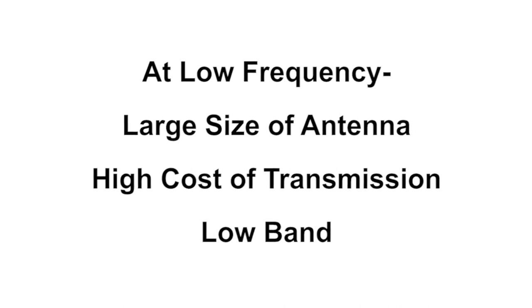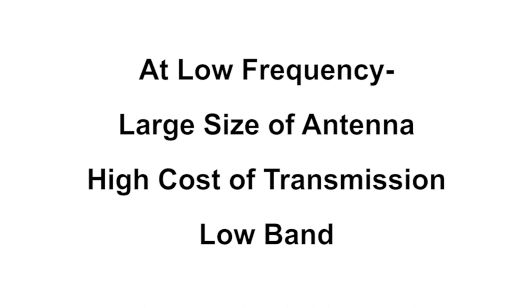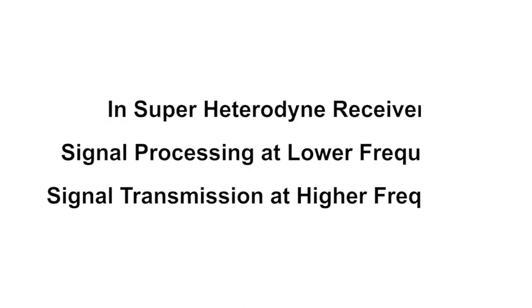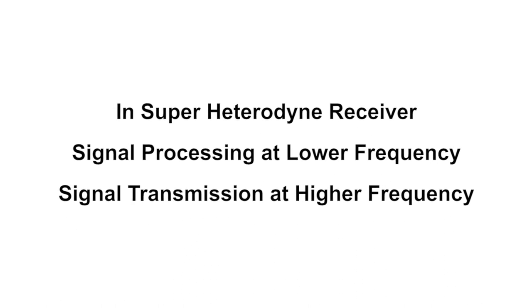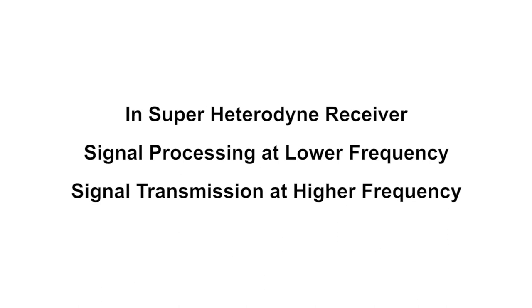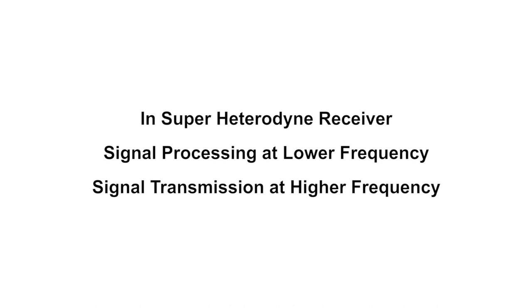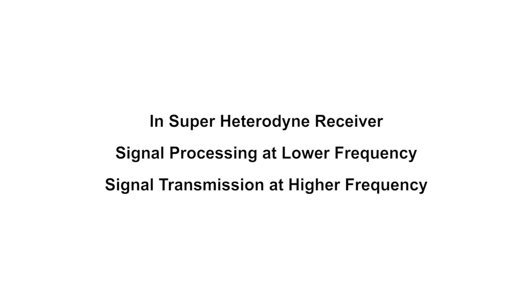At low frequency, for the transmission of a signal, we require a high size of antenna. Therefore, transmission cost of the signal will be high. Also, at lower frequency, band is low. So, signal transmission should be done at high frequency. So, in Super Heterodyne Receiver, we take care of the above mentioned points — that are signal processing at lower frequency and signal transmission at higher frequency.